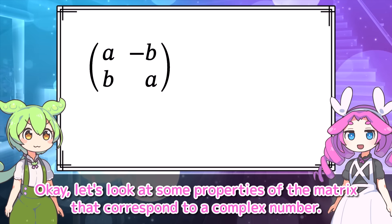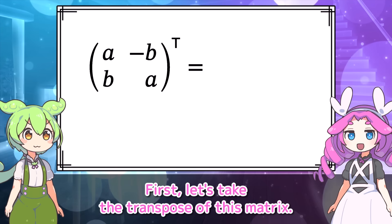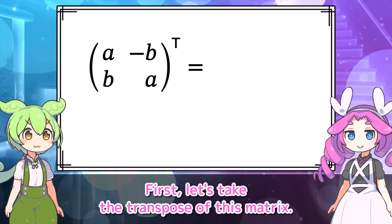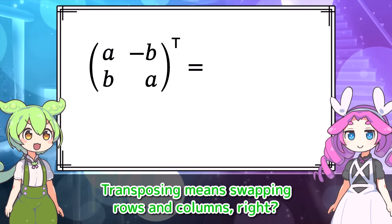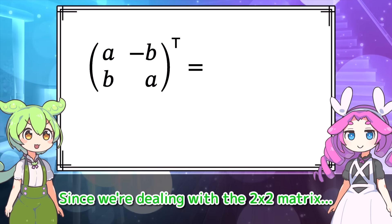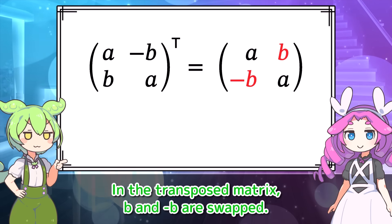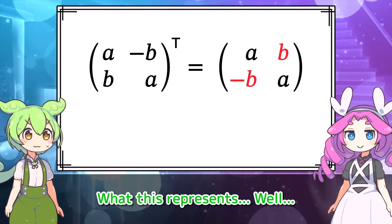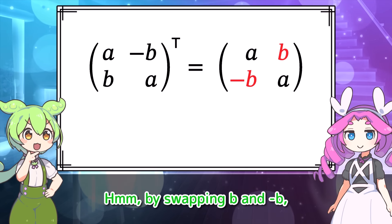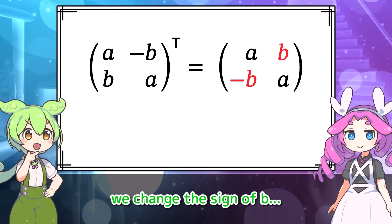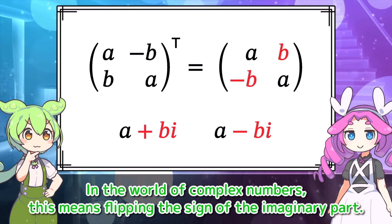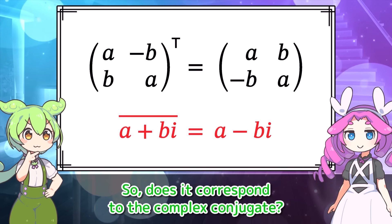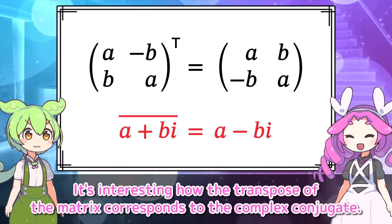Let's look at some properties of the matrix corresponding to a complex number. First, let's take the transpose of this matrix. Transposing means swapping rows and columns. Since we're dealing with a 2 by 2 matrix, in the transpose matrix, B and negative B are swapped. By swapping B and negative B, we change the sign of B. In the world of complex numbers, this means flipping the sign of the imaginary part. So it corresponds to the complex conjugate. It's interesting how the transpose of the matrix corresponds to the complex conjugate.